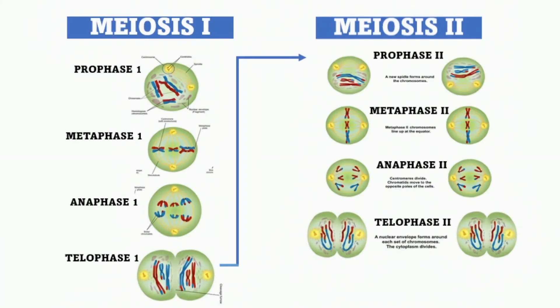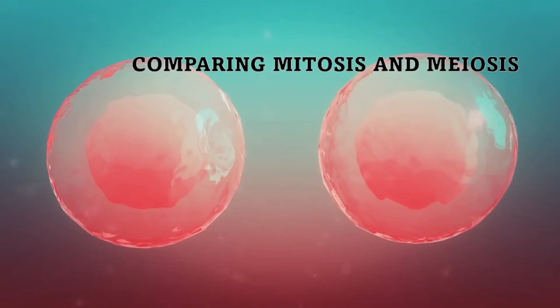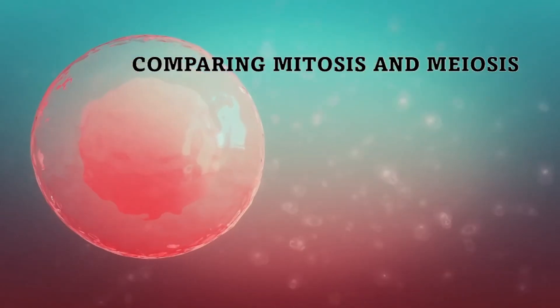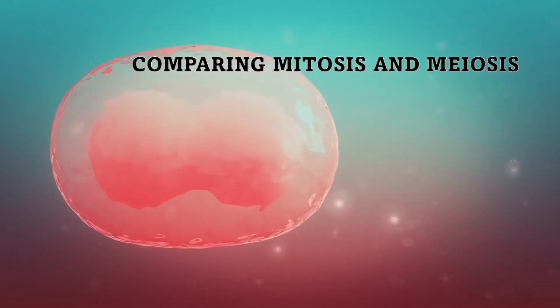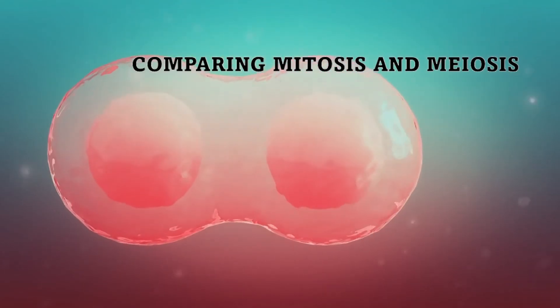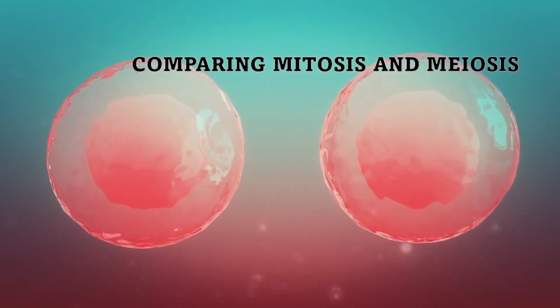After the whole process of meiosis, it will produce four haploid cells, which are unique to sex cells or reproduction. Now that we understand the stages of the cell cycle and cell division, let us compare the difference between mitosis and meiosis through this activity.